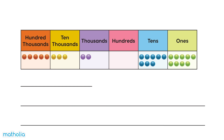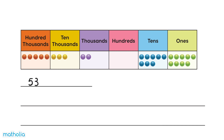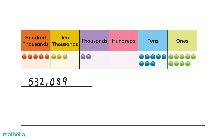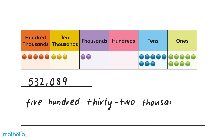Let's find the number represented in the place value chart. There are five hundred thousands, three ten thousands, two thousands, no hundreds, eight tens, and nine ones. The number represented in the place value chart is 532,089.